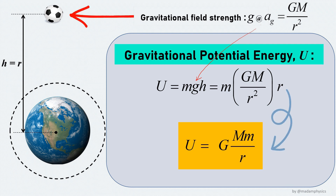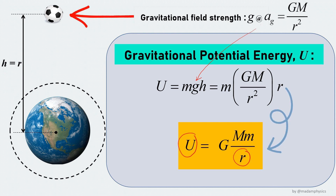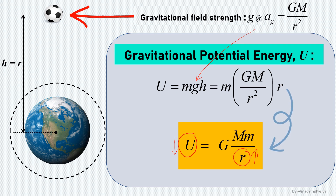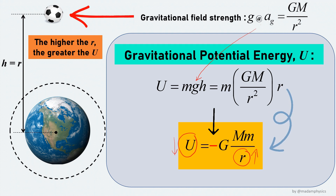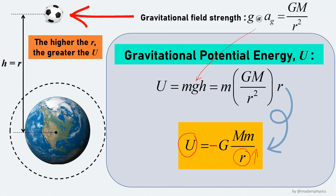This gravitational potential energy represents the amount of work required to bring the ball to that point. However, when we look at the relation between U and r, we see that a higher value of r gives a smaller value of U. This contradicts the theory, where U should increase with r. Therefore, to make the formula match the theory, we simply add a negative sign, giving U equals negative GMm over r. So gravitational potential energy is always negative, and the further the object from Earth, the less negative U becomes.